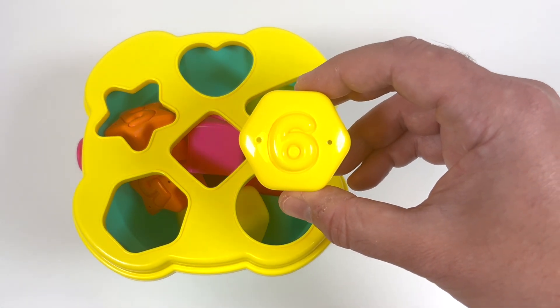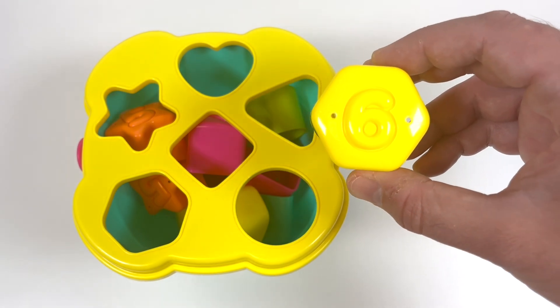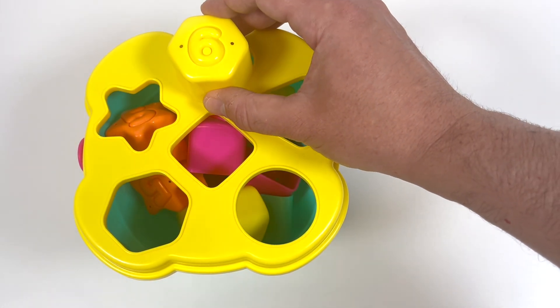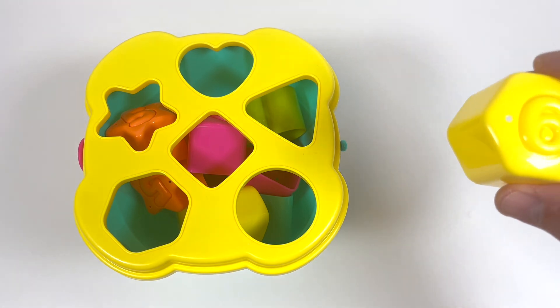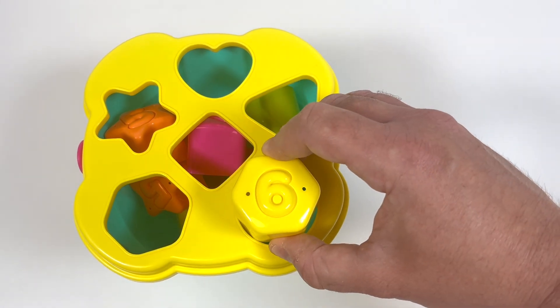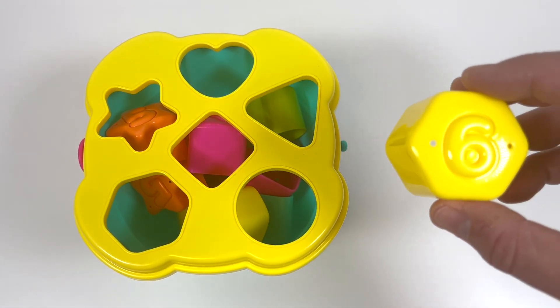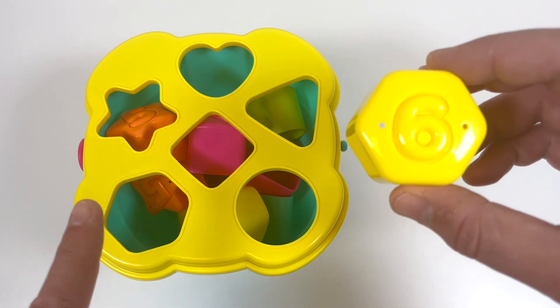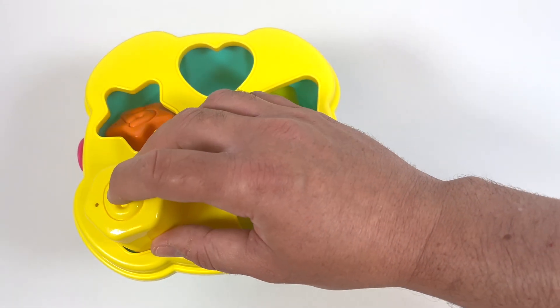We sorted all the shapes. And the last shape is the yellow hexagon. Oh, yes. It goes here. No, that's not right. Maybe here? No, that's not right either. Ah, it goes right here.